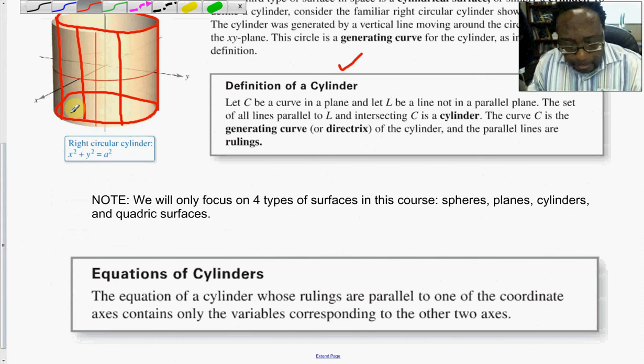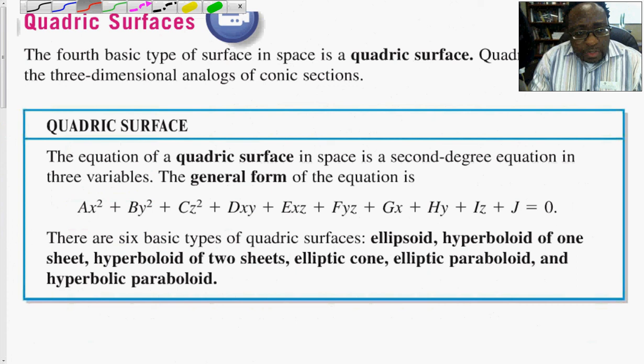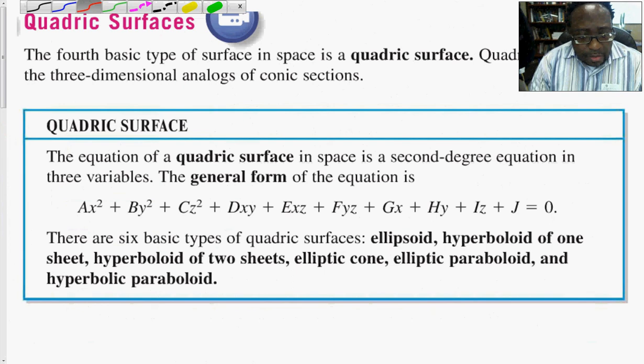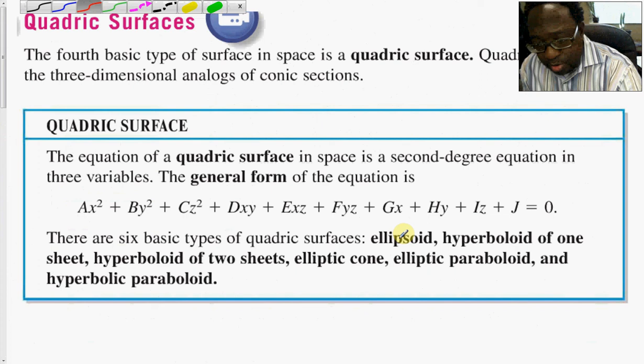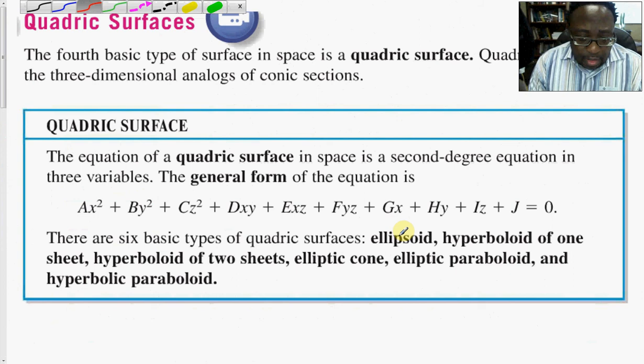The fourth type of surface is a quadric surface. A quadric surface is a combination of the conic sections. Back in conic sections we talked about hyperbolas, ellipses, parabolas, and circles. From a circle and an ellipse we form what's called an ellipsoid, and from those combinations we can also talk about hyperboloids of one sheet, hyperboloids of two sheets, elliptic cones, elliptic paraboloids, and hyperbolic paraboloids.